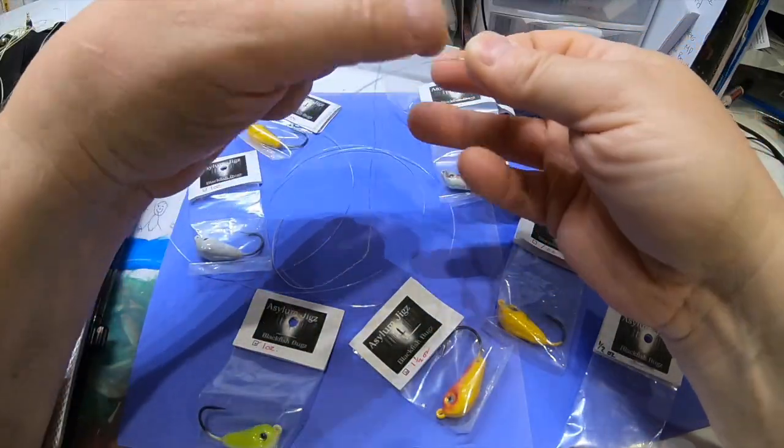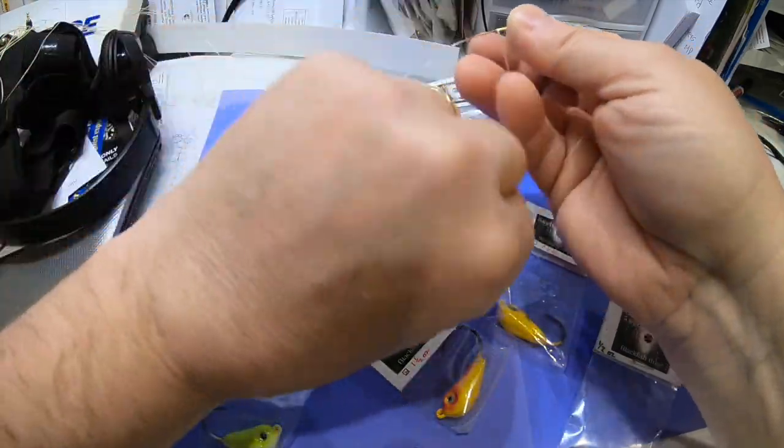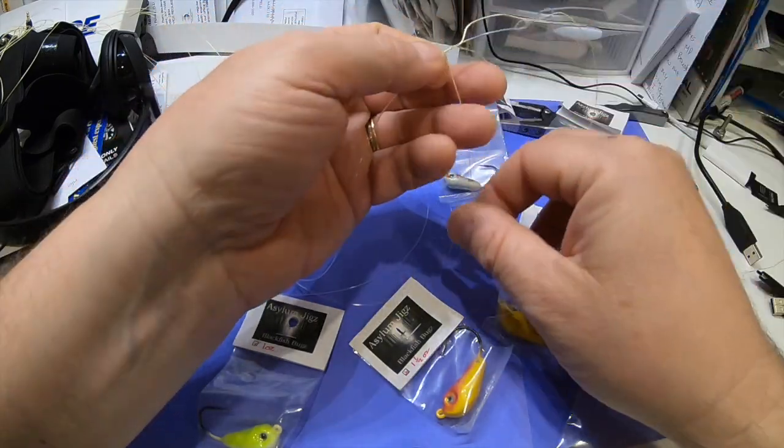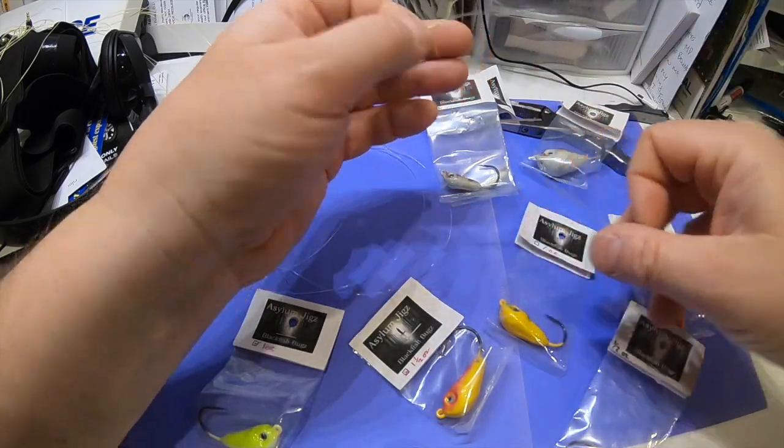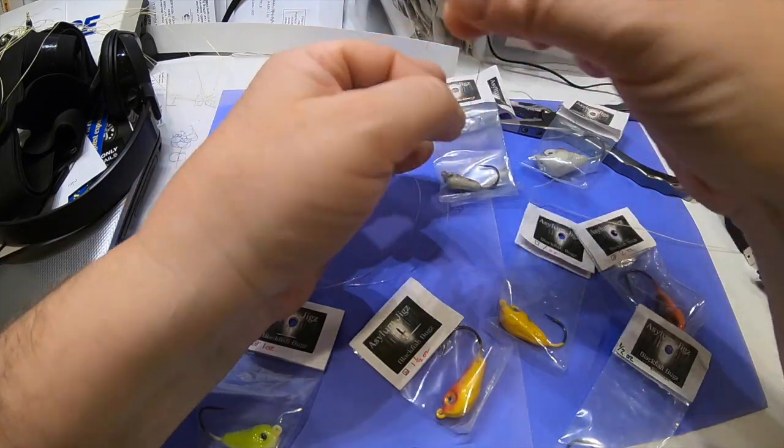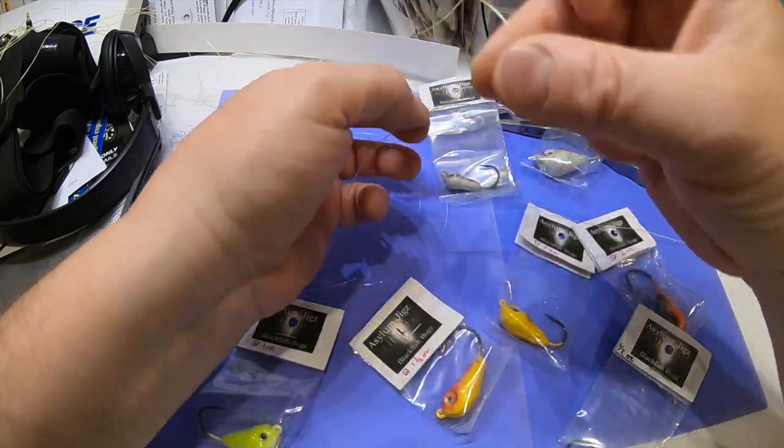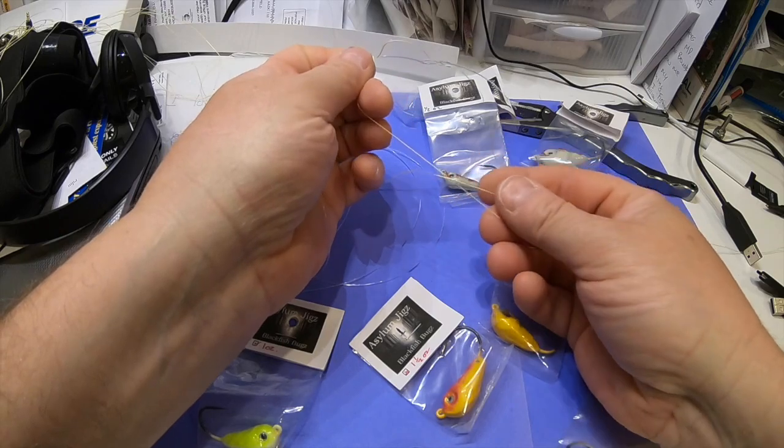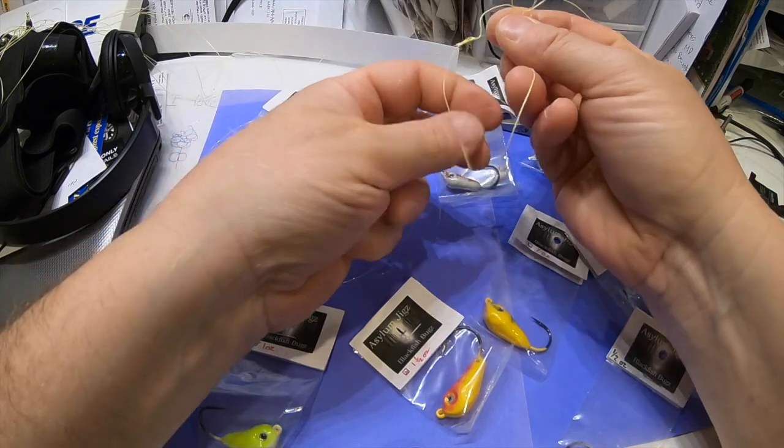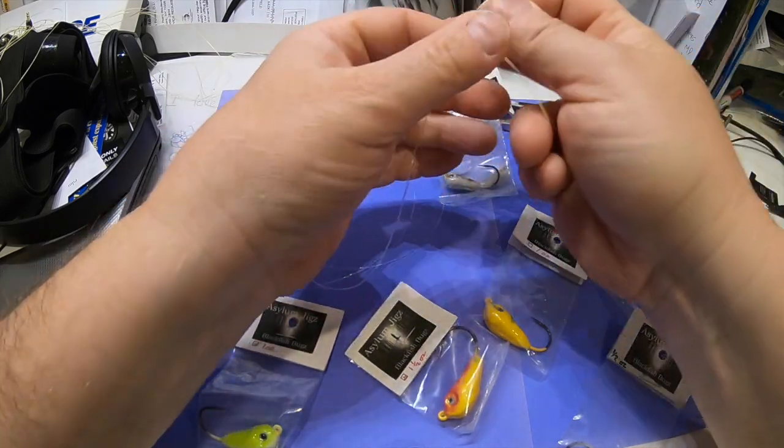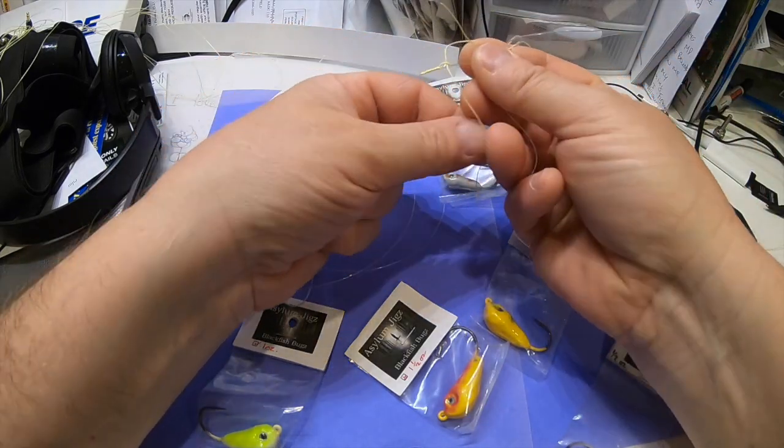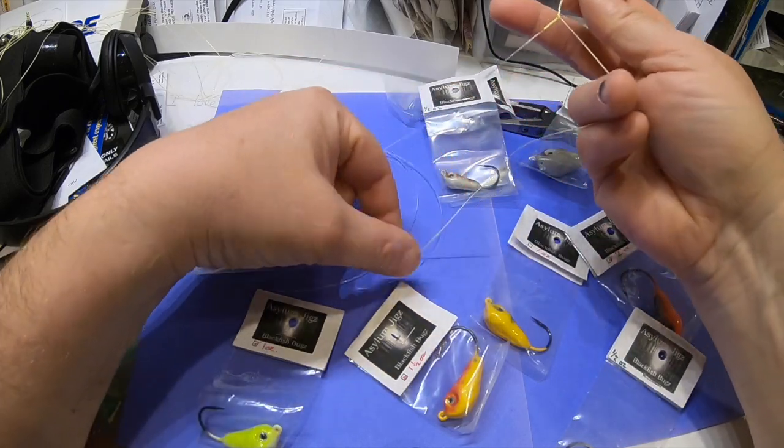I form my horseshoe, I pinch the braid against the leader material, I do eight true wraps down with my braid down the leader material, and I do another eight true wraps back up.